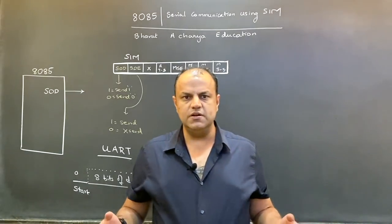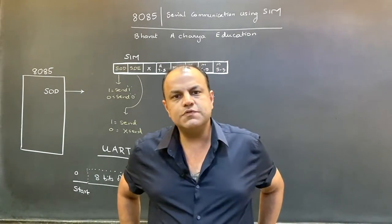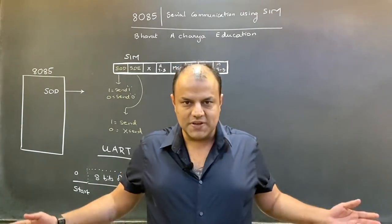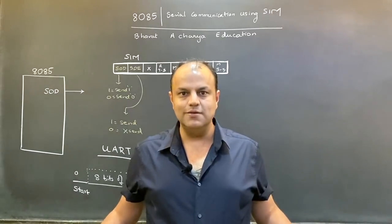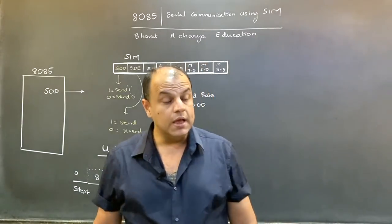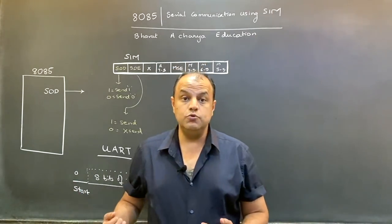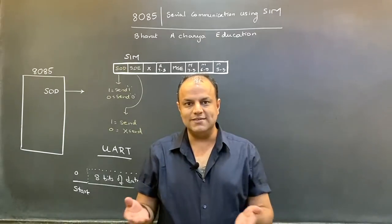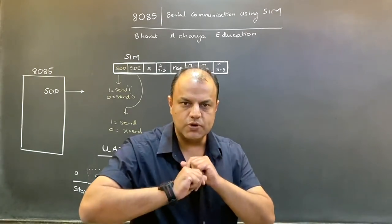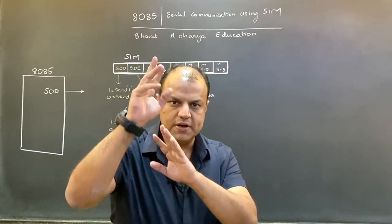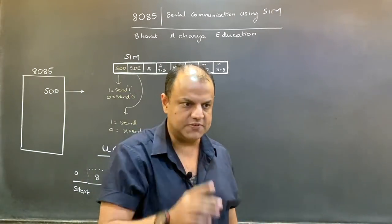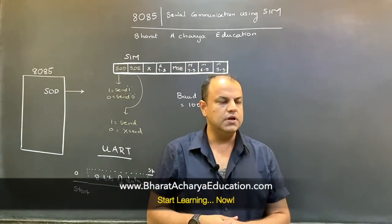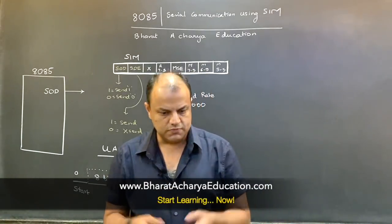Now why do we do serial communication? Which is faster — serial or parallel? Of course parallel, because you're sending multiple bits at a time. Can 8085 do parallel communication? Of course — it has an 8-bit data bus. You can directly send out 8-bit data in one cycle. So then why is serial communication used? Why are we doing this program?